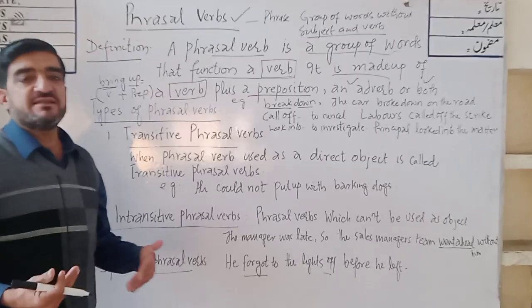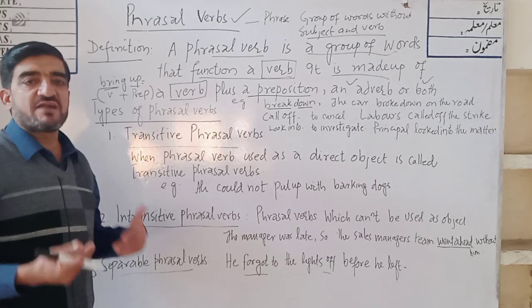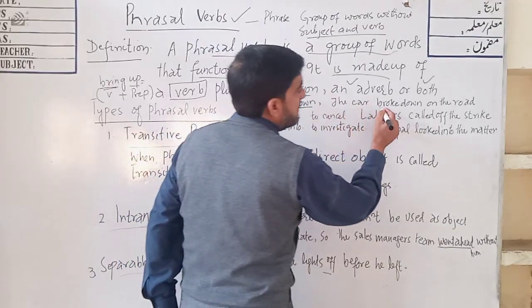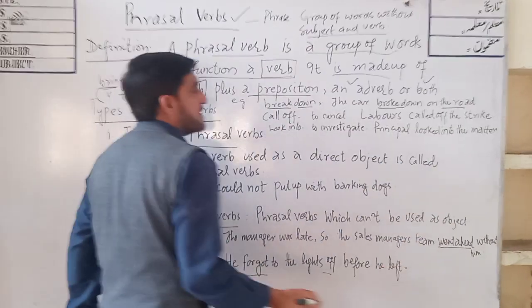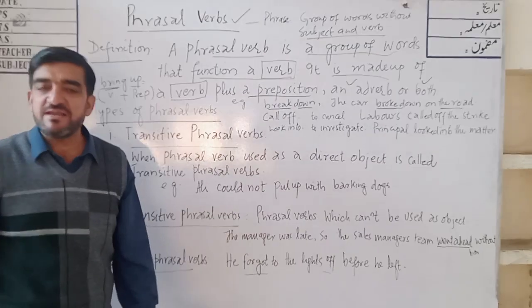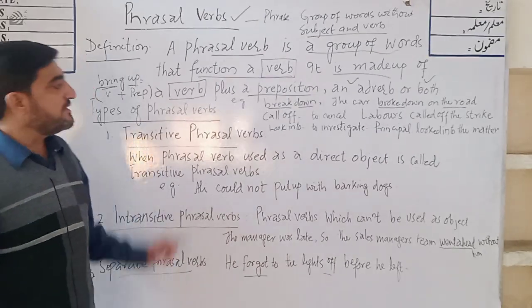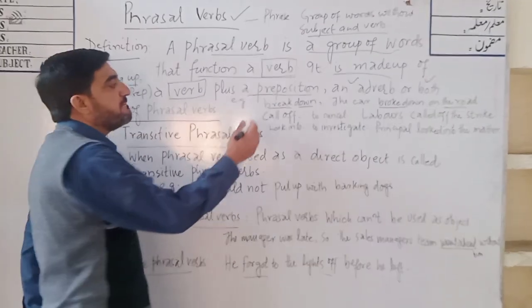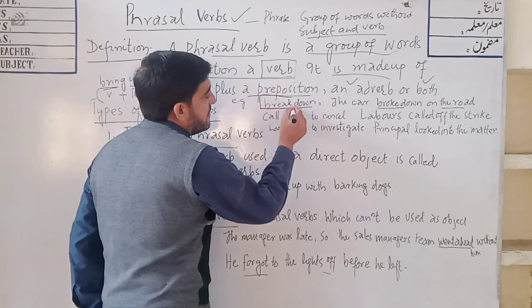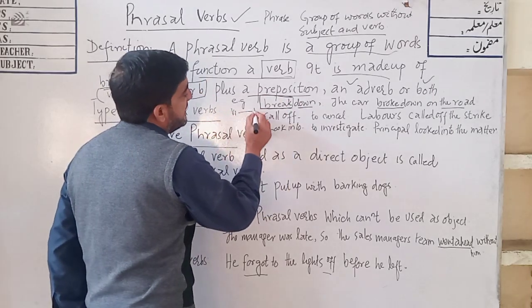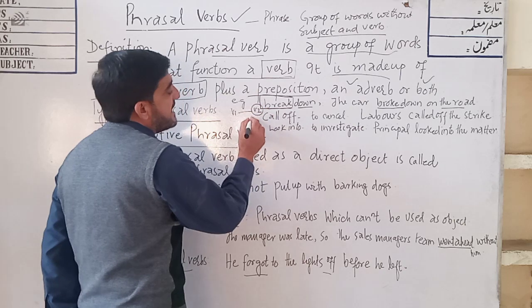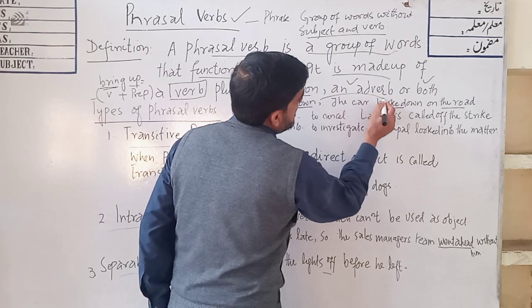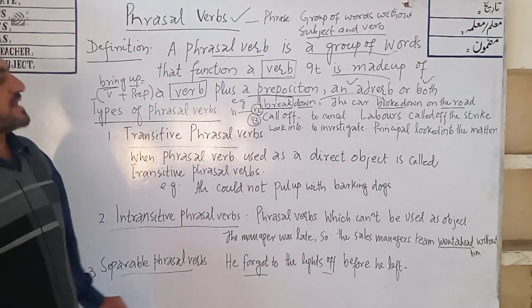For example, 'break down' — 'break' is the verb, 'down' is the preposition. 'Break down' means when a machine stops working or functioning all of a sudden. So: 'The car broke down on the road.' Dear students, remember whenever you are using a phrasal verb in a sentence, in most cases the verb changes from V1 into V2 or V3. Here you can see that 'break' is changing to 'broke.'